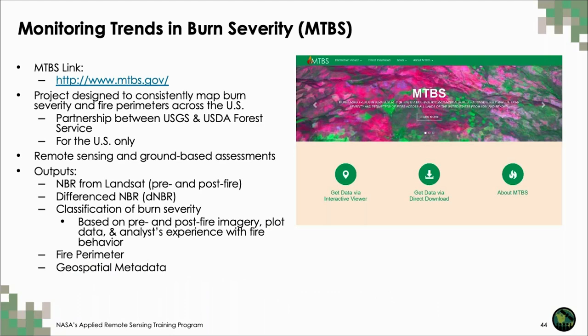The Monitoring Trends in Burn Severity project, or MTBS, is a great resource for mapping burn severity. This project provides NBR, dNBR, burn severity classifications, and fire perimeter data. These maps are created by technicians familiar with the areas and the analysis approach for assessing burn severity with Landsat. The project only works within the US, but I recommend referencing the MTBS methods for your own burn severity assessments regardless of where your study area is located.